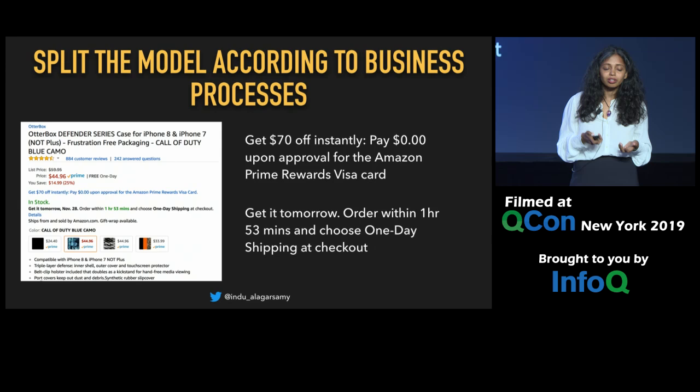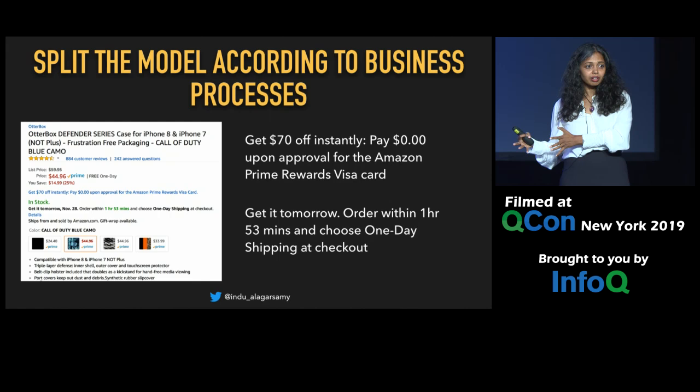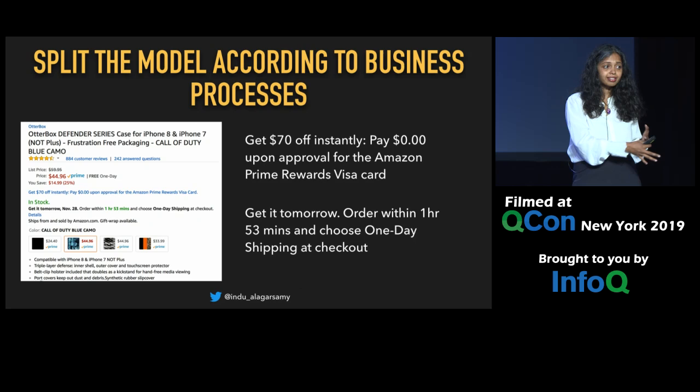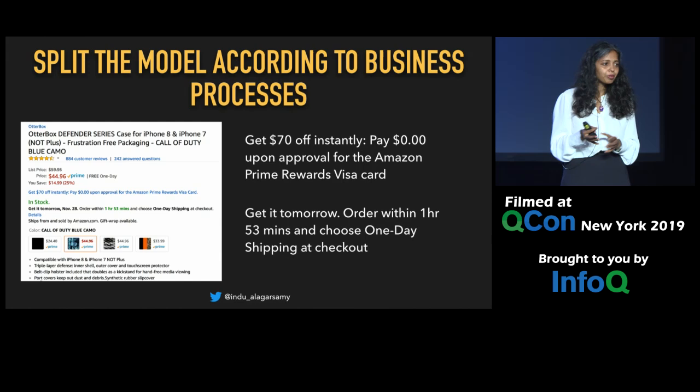For example, Amazon gives you $70 off if you buy the Prime card. There are business rules that involve buying a Prime card and things in the shipping context and pricing context. You can see there are a lot of participants. You can ask yourself: if you wanted to have transactional consistency, what things need to be together? You can start to form your models and see where things fit.